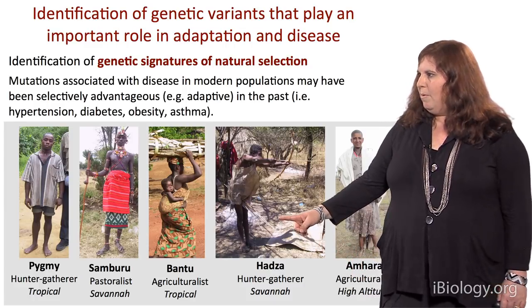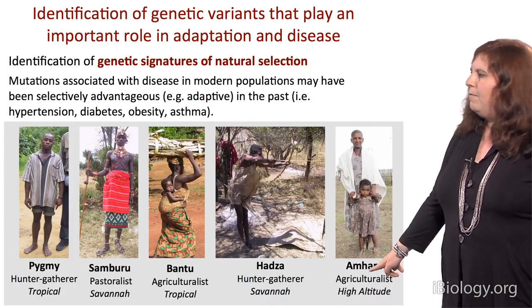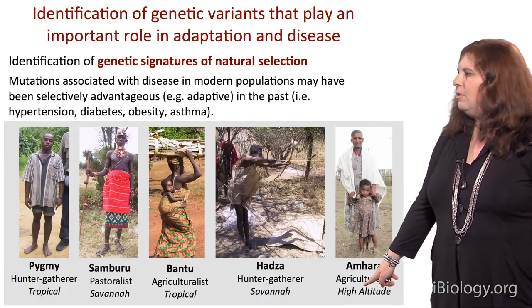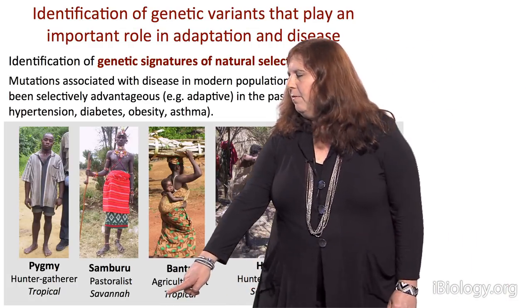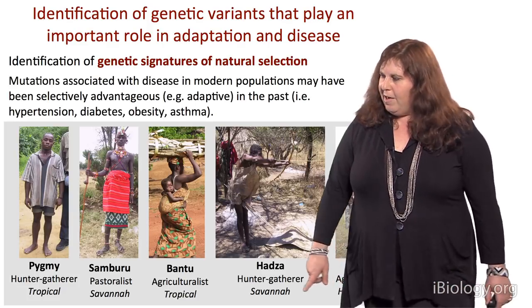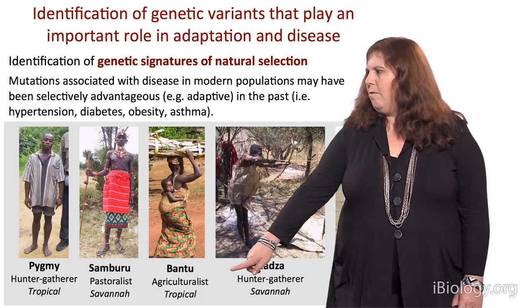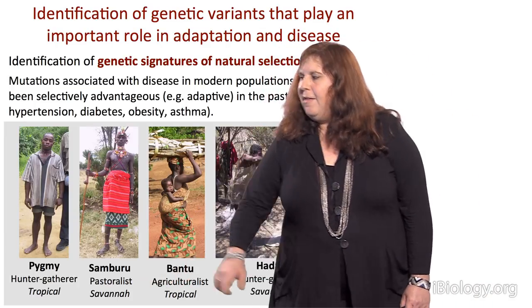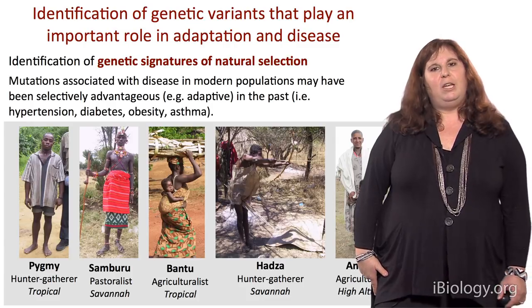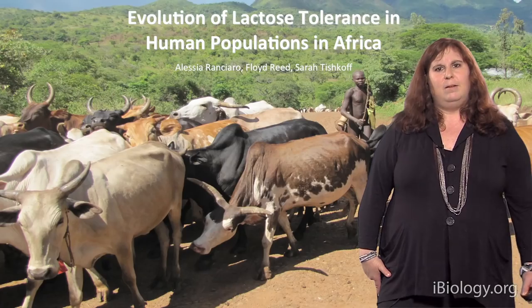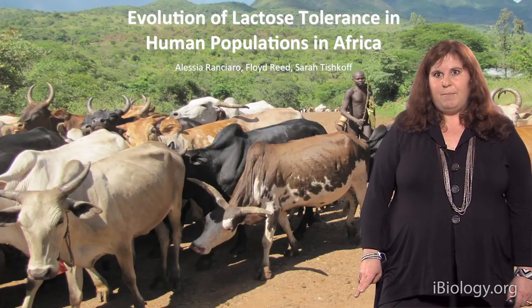Here I'm showing a few of the populations we've studied in Africa. We have people living at very different climates — high altitude, low altitude, savannah, and tropical environments. We have people with very different diets: agriculturalists, hunter-gatherers, or pastoralists, and they have very different infectious disease exposure, so they've likely undergone local adaptation to different environments. I'm going to tell you about two examples today.